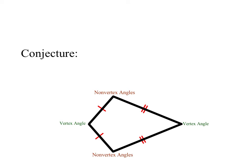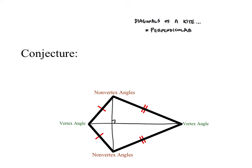A conjecture is basically an educated guess — it's based on what we can see or what we already know. I'm going to give you information about the kite and its diagonals. So I'm going to draw the two diagonals. The diagonals of a kite are perpendicular to each other — that means we form a right angle in all four of those corners.